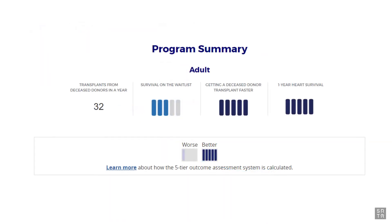In this video, we'll describe how tiers are assigned for each of the three outcomes presented in the initial search results section of the SRTR website. We first describe how this is accomplished for the one-year organ survival outcome. A similar methodology is applied to the pre-transplant metrics, with a few differences as described later.